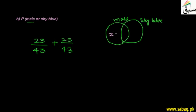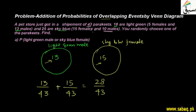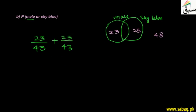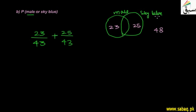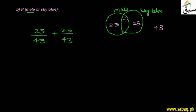Male is 23 and sky blue is 25, so the raw total is 48. But we only have 43 parakeets, meaning we have double-counted some. The overlapping group is sky blue males, which is 10. So we subtract 10: 48 minus 10 is 38 over 43. That is our answer.